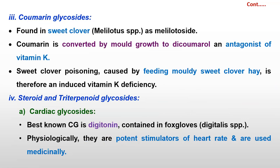Coumarin is produced in sweet clover, and coumarin is converted by mold which grows in the sweet clover hay. That mold converts it to dicoumarol. So coumarin is converted into dicoumarol, and dicoumarol is an antagonist of vitamin K — it works against vitamin K. Sweet clover poisoning is caused by feeding of moldy sweet clover hay, and therefore it induces vitamin K deficiency.